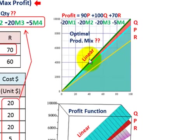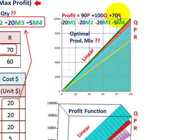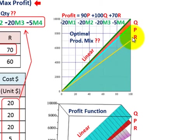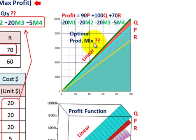Rather than just looking at numbers, I've shown a 2D graph of that profit equation. Our different product revenues minus our different material costs gives us profit. We're looking for the optimal product mix between products Q, P, and R. The key is that we have a linear relationship on the profit function between those three different products.